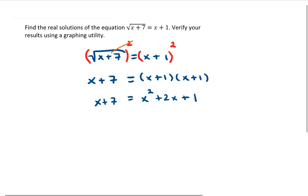So as you can see, by eliminating the radical, we now have a quadratic equation. What I would recommend doing here is setting the quadratic equation to 0, and the way to do that is to maybe go ahead and subtract x from each side. While you're at it, let's go ahead and subtract 7 from each side as well. That's going to give us 0 on the left, and on the right, x squared plus x minus 6.